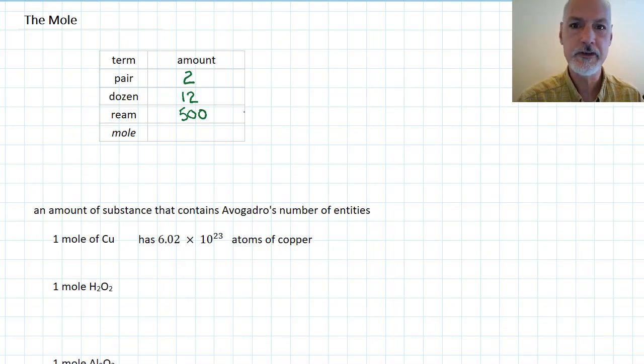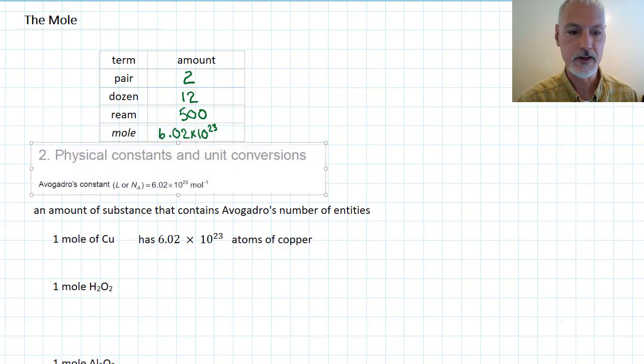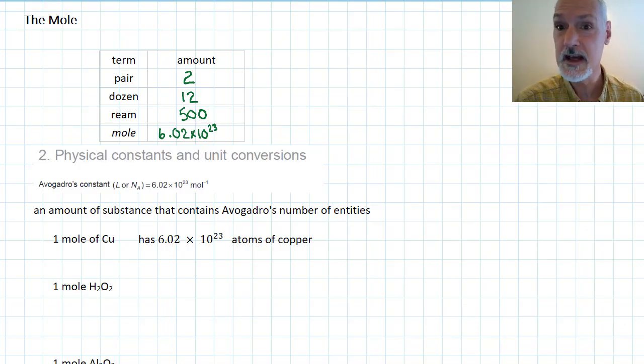Now, a mole to a chemist also represents a certain amount, and that amount is 6.02 times 10 to the 23rd particles. This number is not one you'll need to commit to memory, but you'll use it quite often. It's available in your IB data booklet, and it's called Avogadro's Constant, given the symbol L or NA.